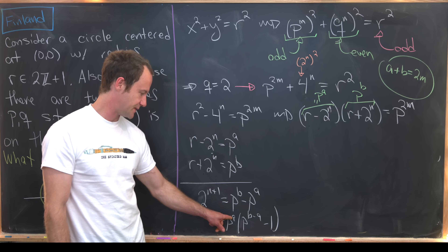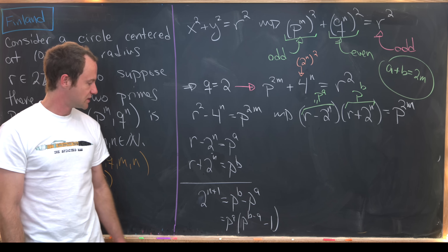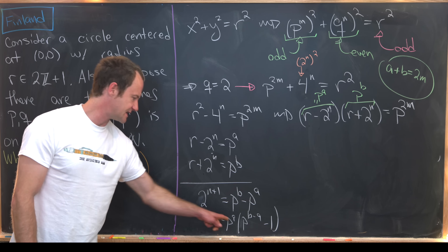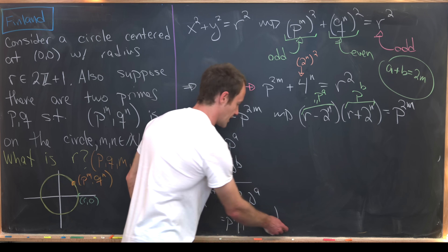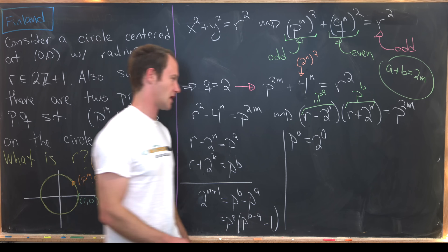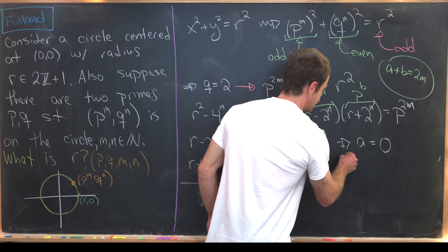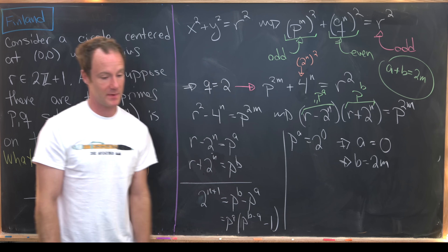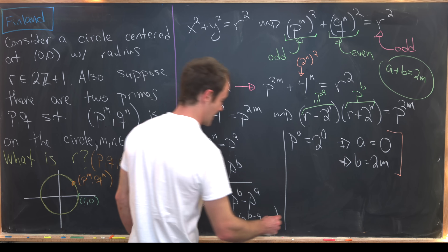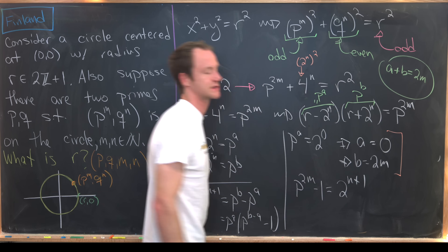We again have a product of two things equal to a power of the prime 2: p^a · (p^(b−a) − 1) = 2^(n+1). Since p is an odd prime, p^a cannot be an even multiple unless a = 0, so p^a = 2^0 = 1, giving a = 0. Substituting back, b = 2m, and the equation becomes p^(2m−1) = 2^(n+1).